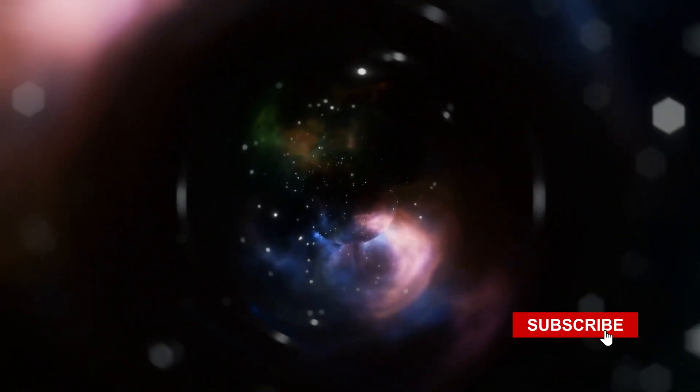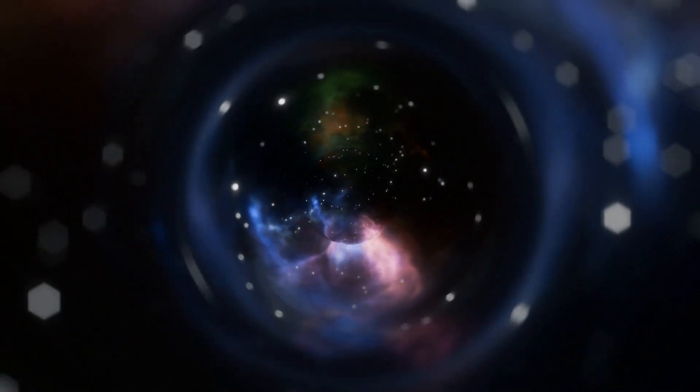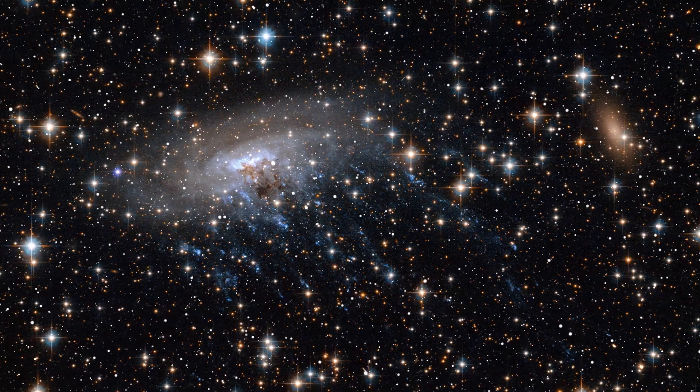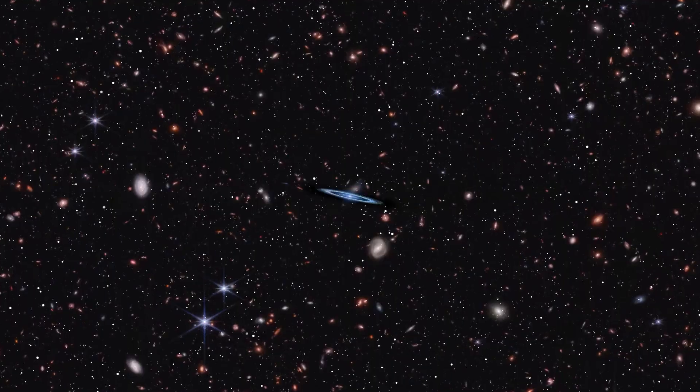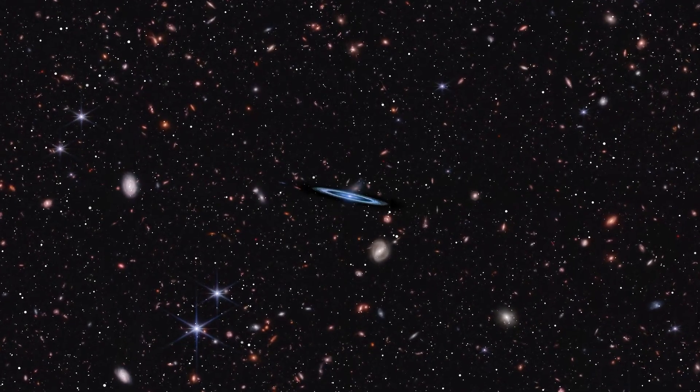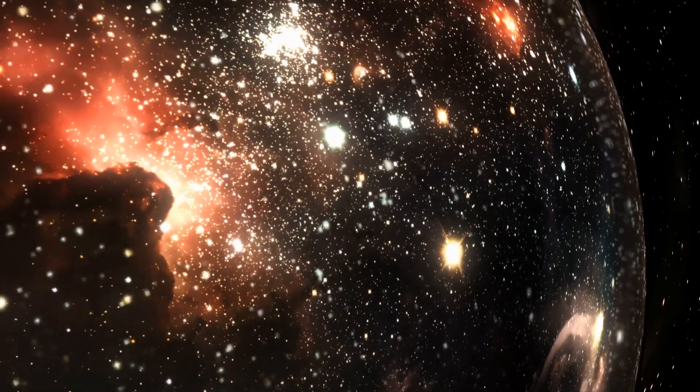Now, that might not sound like a huge difference. But in a universe that's supposed to be isotropic, meaning uniform in all directions, this is a red flag. The spins should be roughly 50-50. That's what randomness looks like.